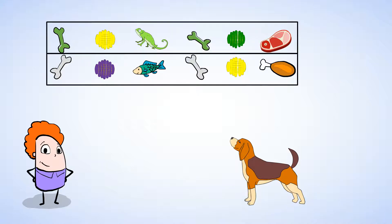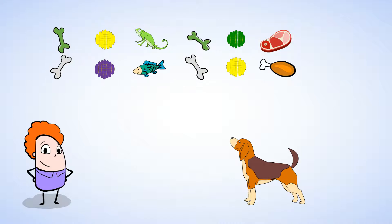Another way to check if a number is even or odd is to count by twos. So, let's count by twos to find out how many toys there are. Two, four, six, eight, ten, twelve.